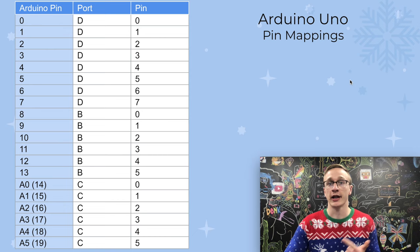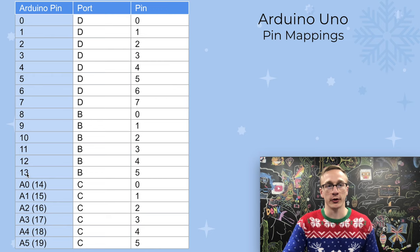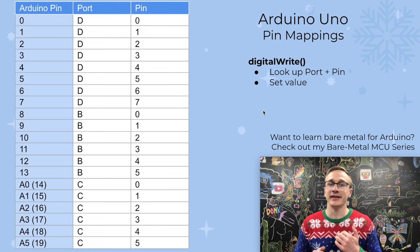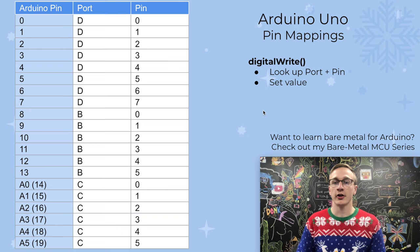In simple terms, we can imagine a big lookup table where we've got the made-up pin number mapping to a real port and pin. So pin 13 is really port B, pin 5. That means any time we call digitalwrite, we first look up the port and pin, then set the value. If you're interested in learning how to do bare metal programming on an Arduino or AVR microcontroller, I'd encourage you to take a look at my Bare Metal MCU series of videos.